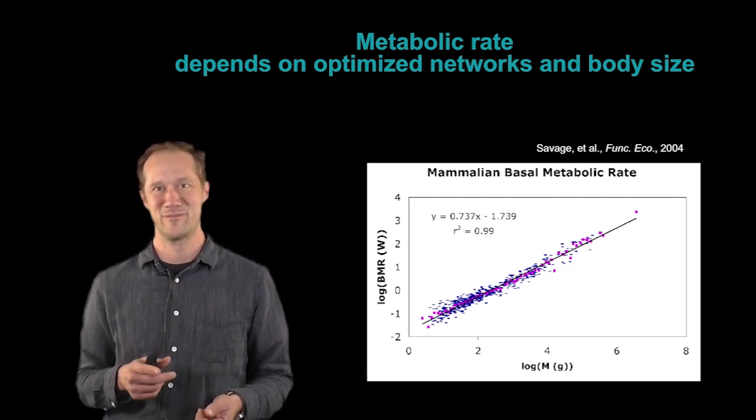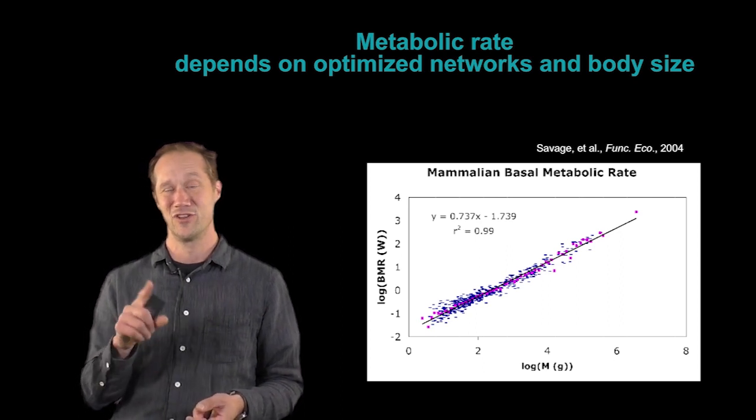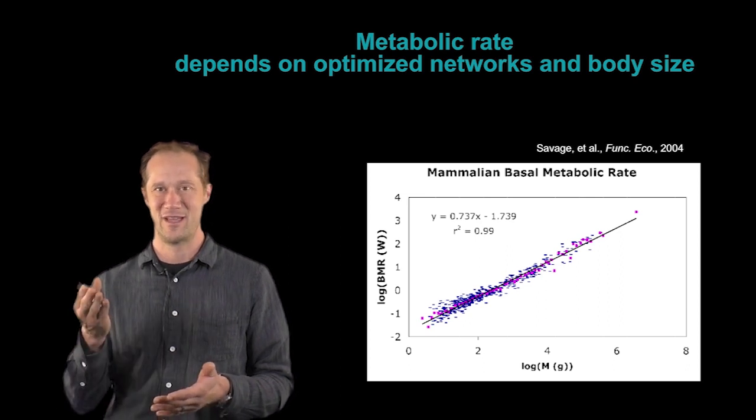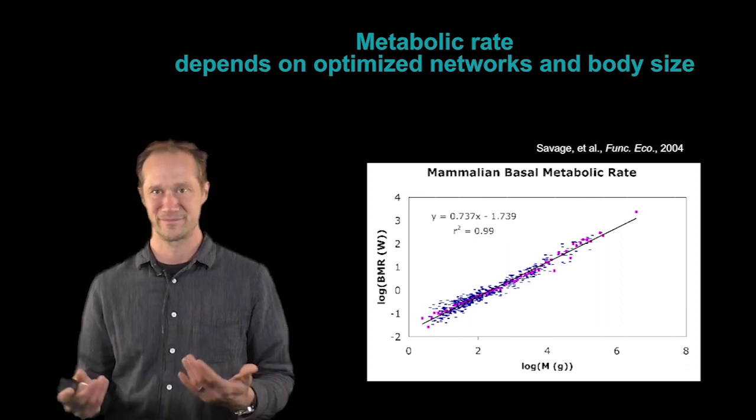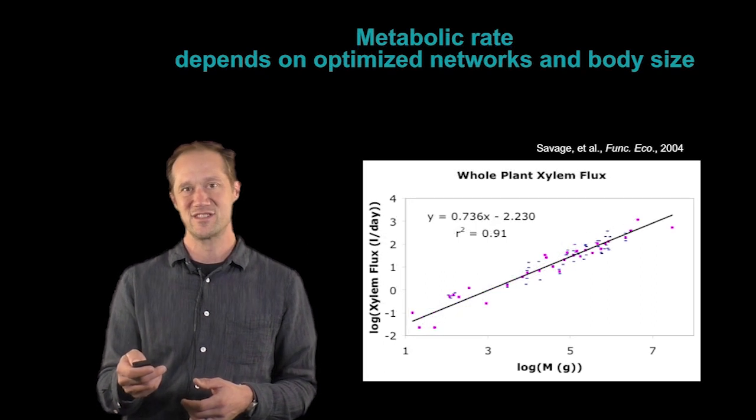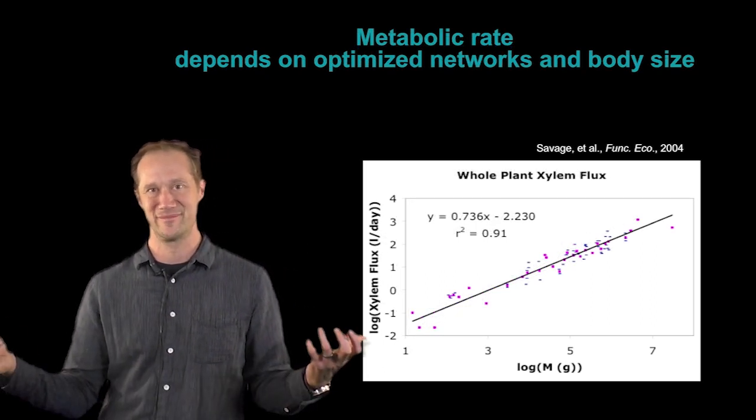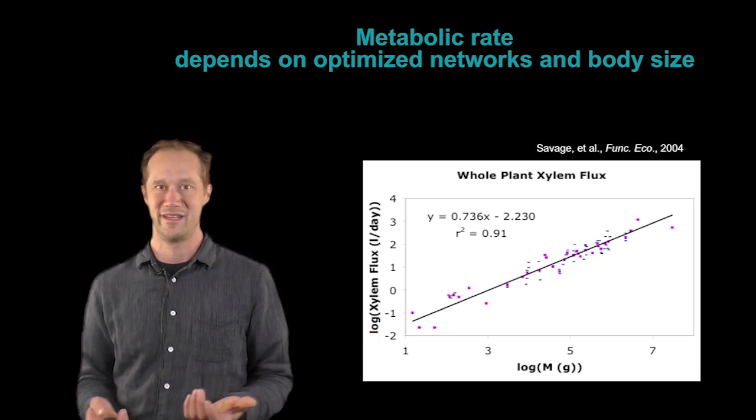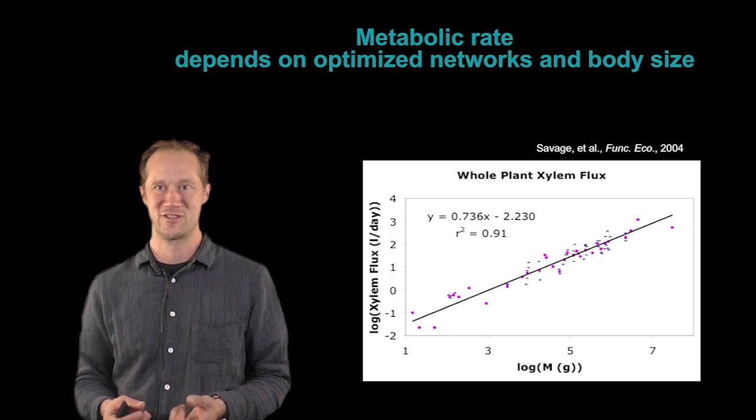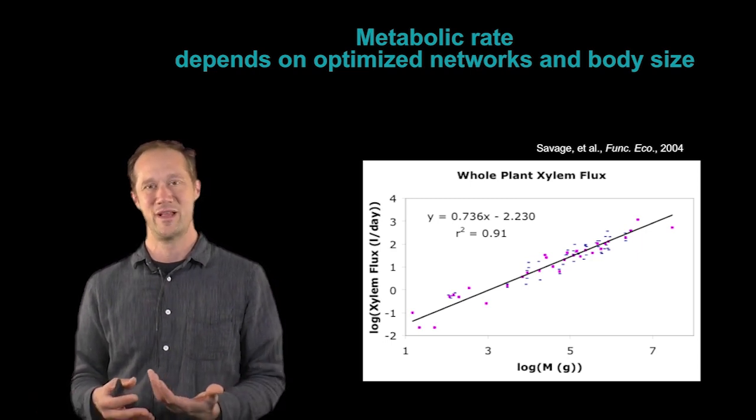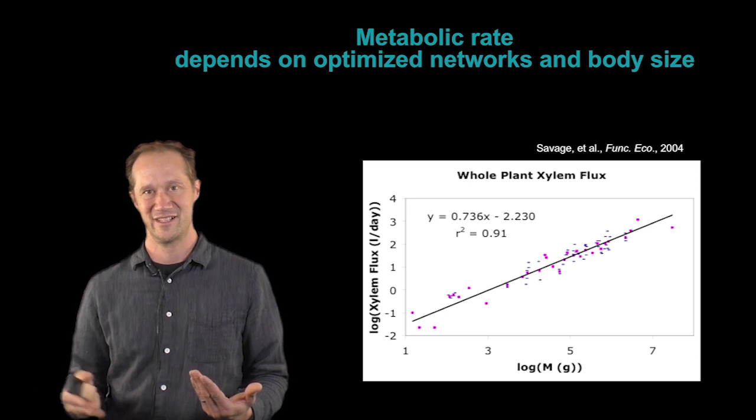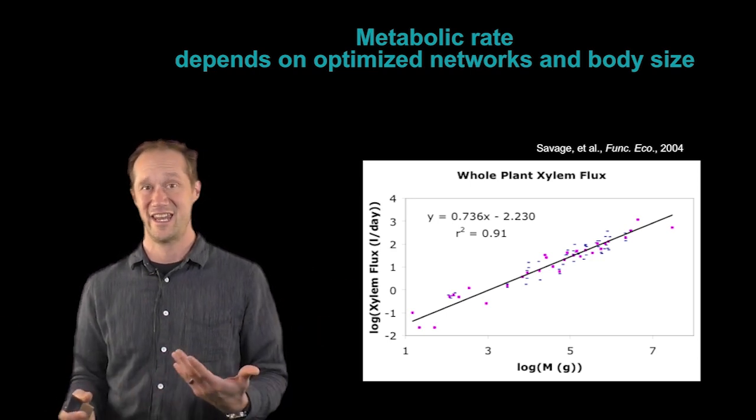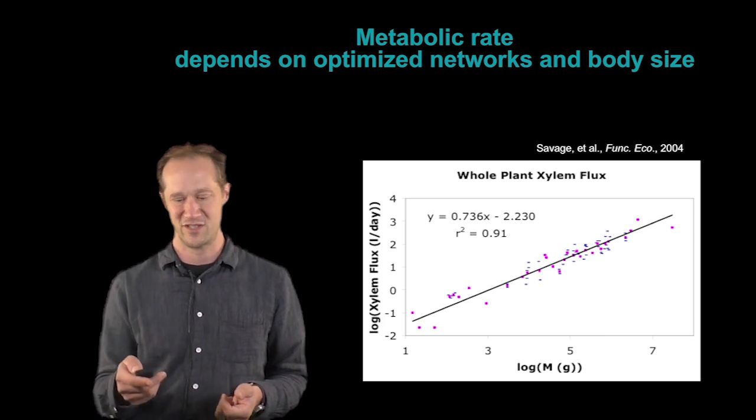And just to make sure for people paying close attention to the axes here, they're logarithmic axes, so a curved line becomes a straight line, and the exponent of a mathematical equation becomes the slope. And this pattern's true not just for across these large, huge range of sizes in mammals, or animals in general, but also for plants. Xylem flux is a similar sort of measure of metabolic rate in plants. We plot that versus body size again. And again, you see a very clear straight line across a huge range in size for plants. And again, an exponent or a slope that's close to 3/4. So the same sort of pattern shows up again.